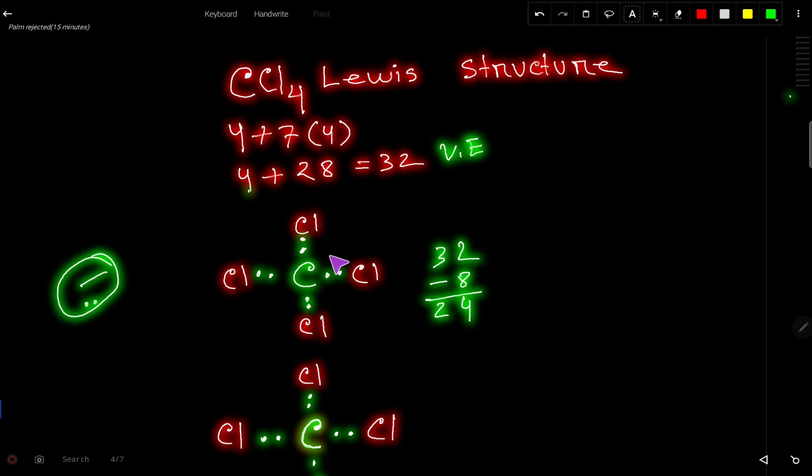However, after connecting, look, for connecting these five atoms together we have used two, four, six, eight. Out of 32 valence electrons we have used here eight, so 24 valence electrons left.